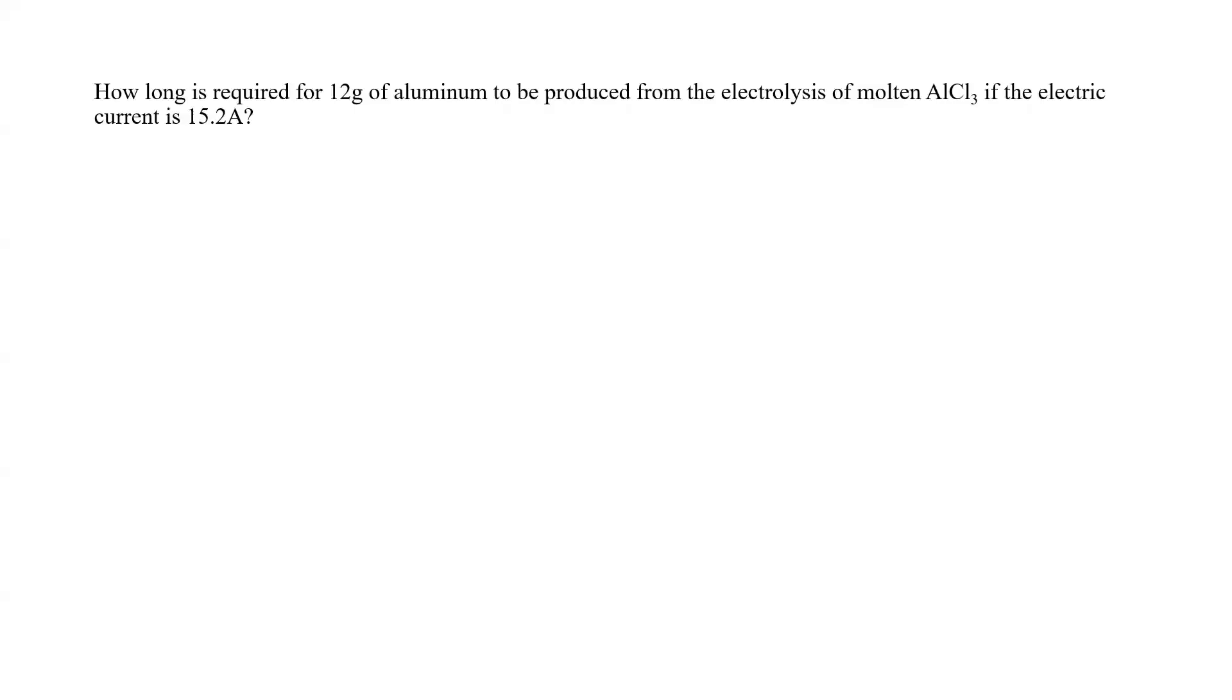This is an electroplating type of question. How long is required for 12 grams of aluminum to be produced from the electrolysis of molten AlCl3 if the electric current is 15.2 amps?